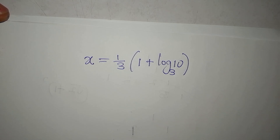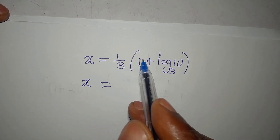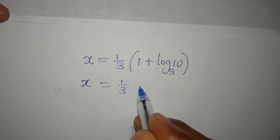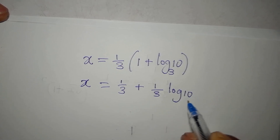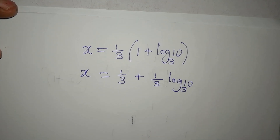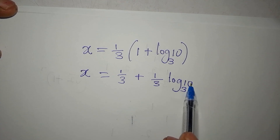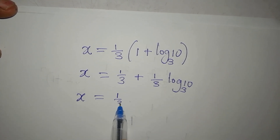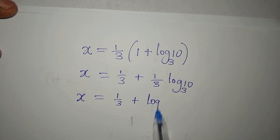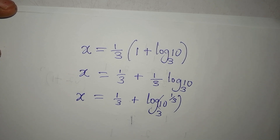Opening the bracket: one-third times 1 is one-third, plus one-third times log base 3 of 10. We can rearrange this as x equals one-third plus log base 3 of 10 to the power of one-third. That is the value of x.